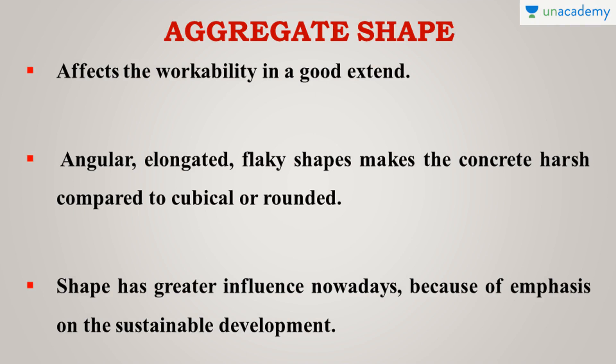Now let's move on to the shape of the aggregate. The shape aspect affects the aggregate and therefore workability to a very high extent. Irregular shapes like angular, elongated, and flaky shapes make the concrete harsh compared to cubical or rounded shapes. These shapes create locking effects, making it very difficult for water and cement to wet the irregular surfaces and preventing homogeneity. This affects smooth lubrication and the fluid movement of ingredients in the concrete matrix. Hence, angular and distorted shapes should not be used; aggregates should be either cubical or rounded in shape for better workability.